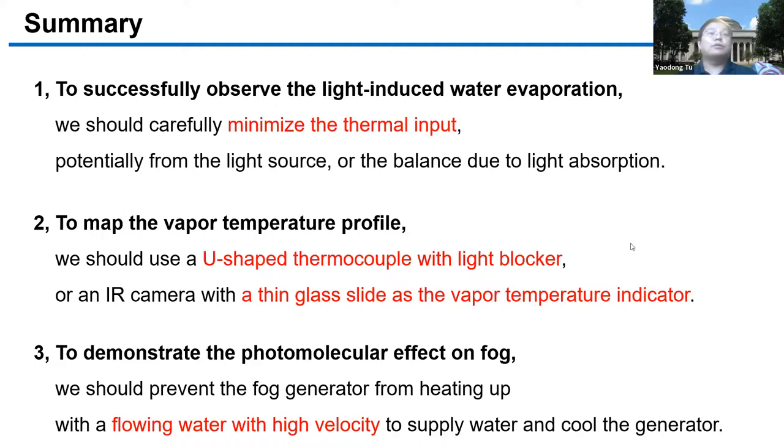For a short summary: first, to successfully observe the light-induced water evaporation, we must minimize the thermal evaporation. Second, to map the vapor temperature profile, we can use a U-shaped thermocouple with a light blocker, or use an IR camera with a thin glass slide as a vapor temperature indicator. To demonstrate the photomolecular effect on fog, we should avoid the fog generator from heating up, so we can use high velocity flowing water to simultaneously supply water and cool the fog generator.